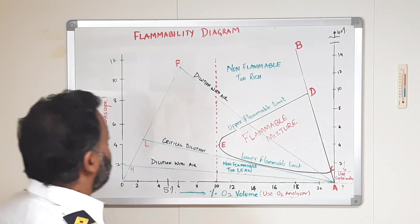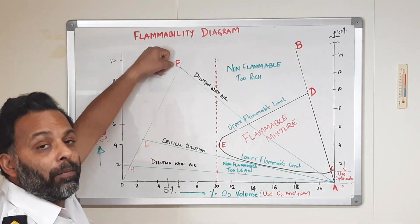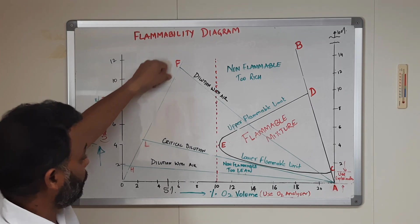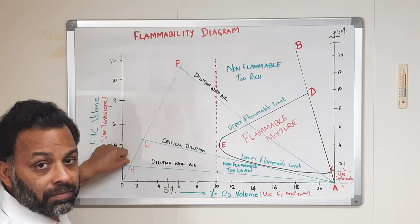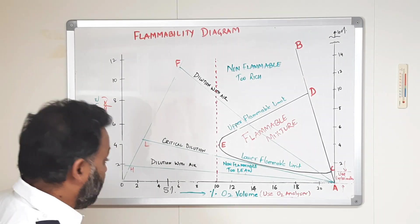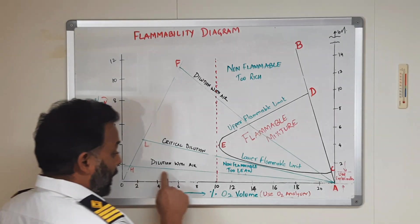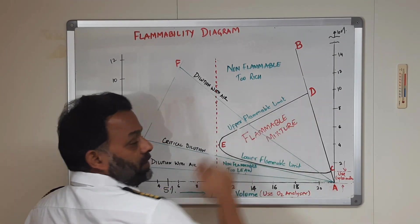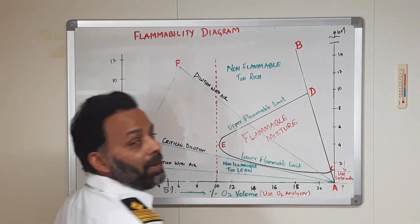So, that is why when we are discharging, we continue to pump more inert gas into the system and we bring this point F to H. So, even if we are diluting with air now, it will follow this path which is much further, much clearer of this flammable mixture region.